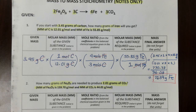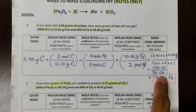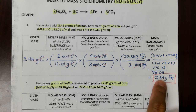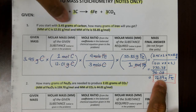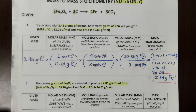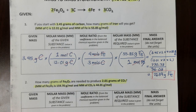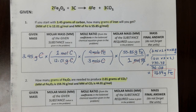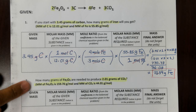So 21.39 grams Fe is the amount of iron we will produce from 3.45 grams of carbon in this reaction. Now I will give you the chance to solve number 2 for practice.